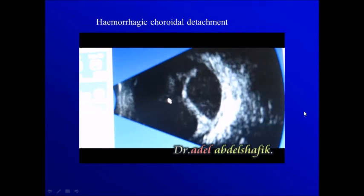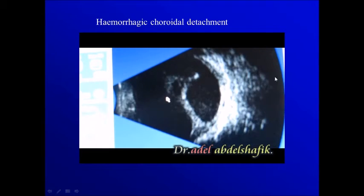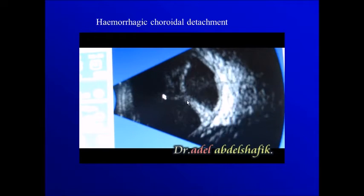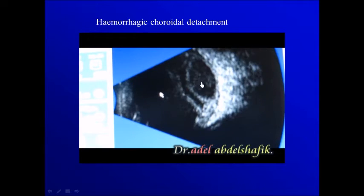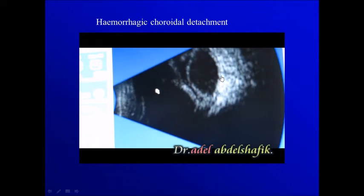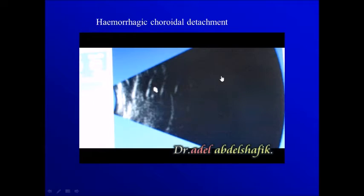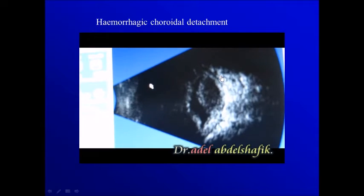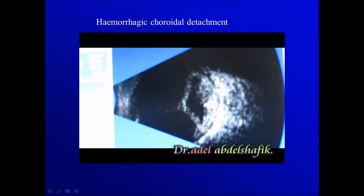In this example, we have a choroidal detachment, but you notice under the detached choroid we can see reflections. This is a hemorrhagic choroidal detachment.